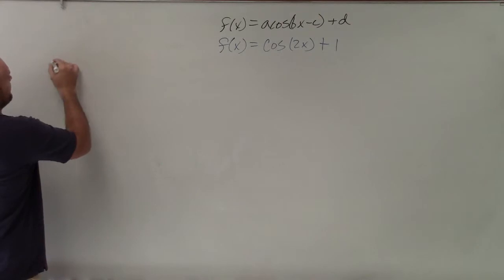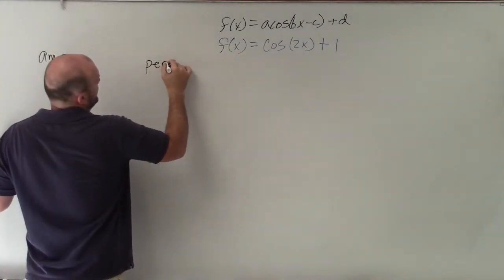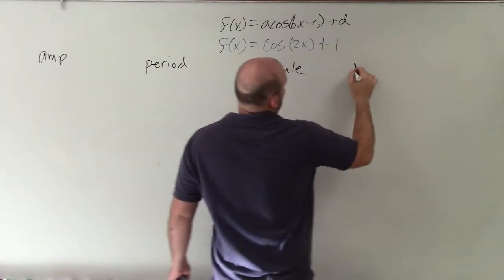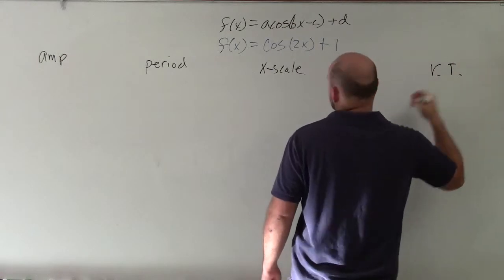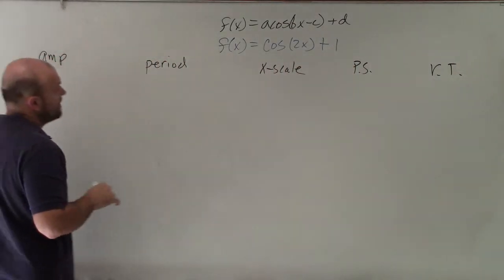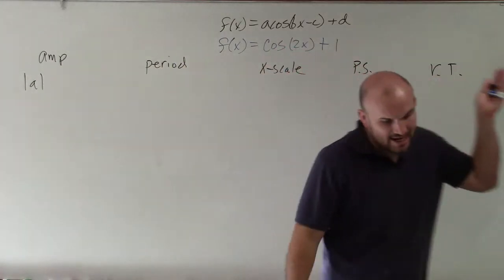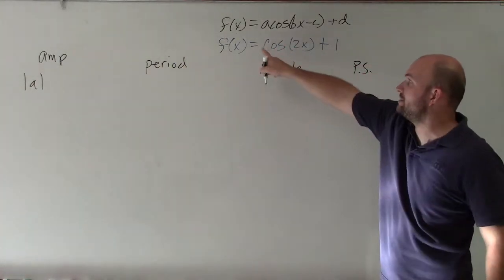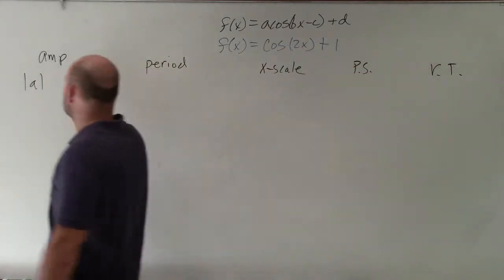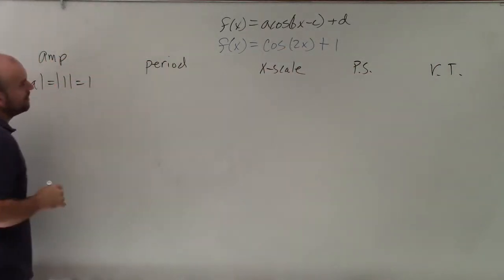The characteristics that we're going to be looking for are the amplitude, the period, the x-scale, the phase shift, and the vertical transformation. To determine the amplitude, all we're simply going to do is take the absolute value of a. You can see in this case, for our formula, we don't have an a - well, we do. It's a 1 being multiplied by our cosine. Therefore, it's absolute value of 1, which is just 1.